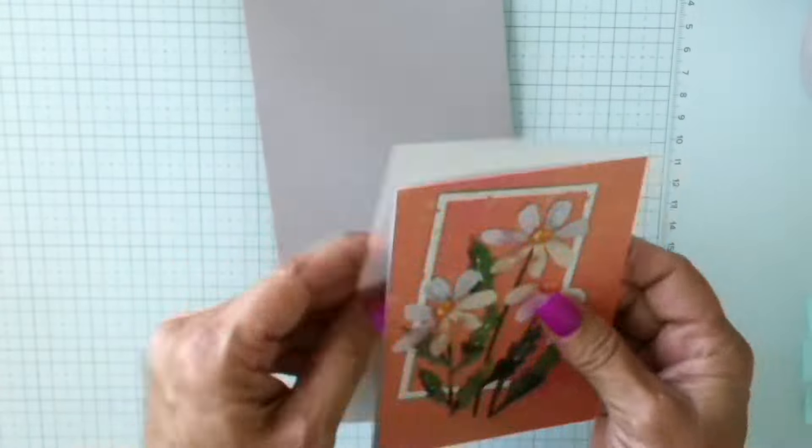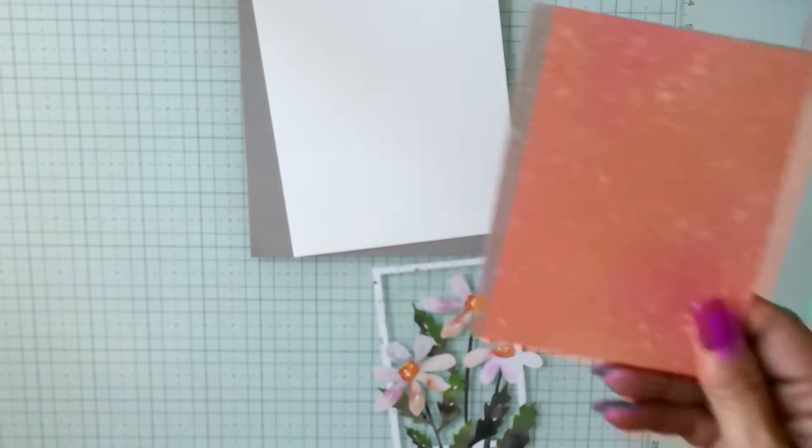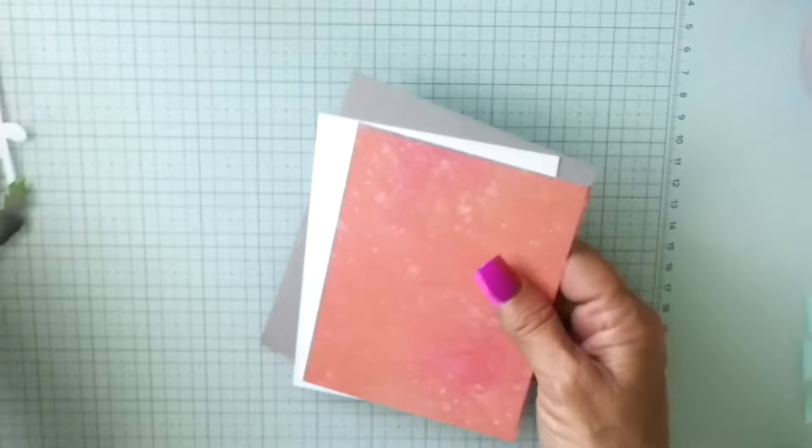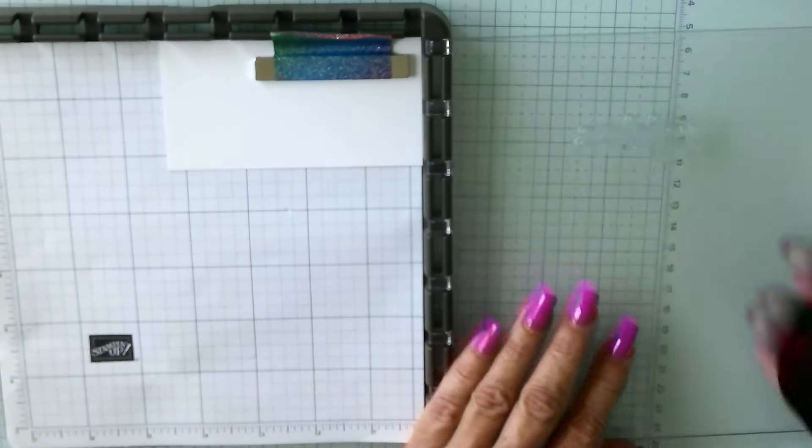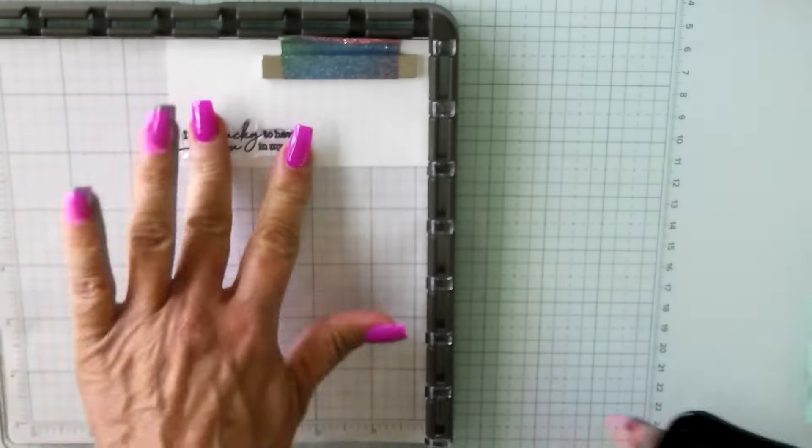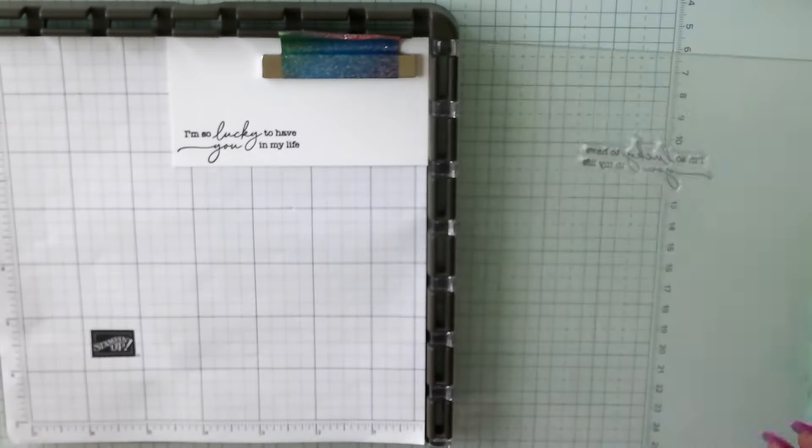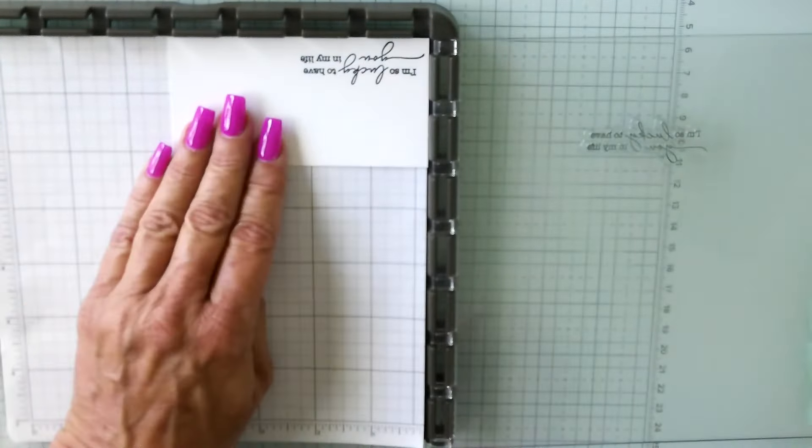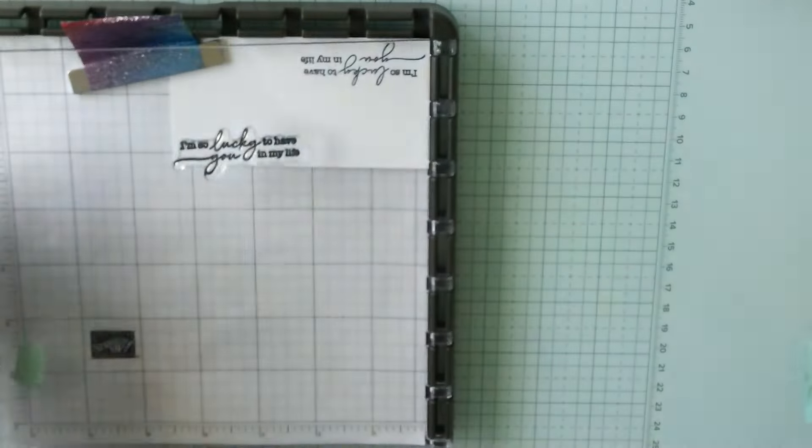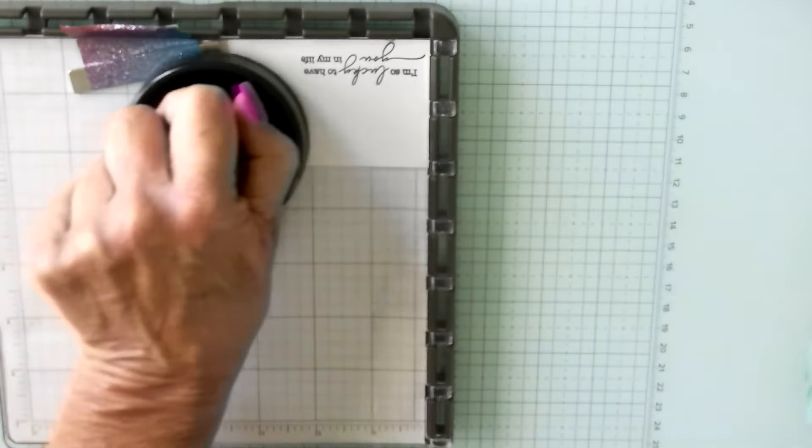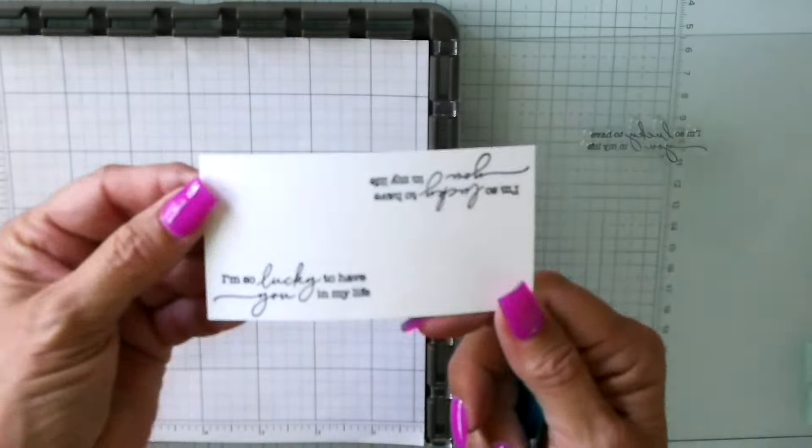For our first card, I am pulling in a Gray Granite card base, four and a quarter by five and a half. Our mat is Basic White cardstock cut down to four by five and a quarter. Then I took a card base and cut it down to three and seven-eighths by five and one-eighth. I'm pulling in a piece of Basic White regular scrap and laying down our sentiment with Memento Tuxedo Black ink. I'm going to stamp it again to use up the paper and get that sentiment stash built up.